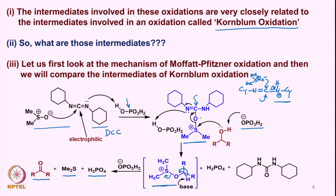What happens is that when dicyclohexylcarbodiimide is protonated and the oxygen from DMSO is lost, a carbon–oxygen double bond forms, leading to the formation of dicyclohexyl urea — a urea having two dicyclohexyl parts. This is an important byproduct, but it does create some problems which we will talk about in a minute.